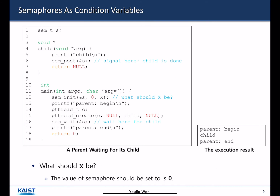We can also use the semaphore as a condition variable. There is a child thread that prints the string 'child', and the parent thread's main creates a thread. We would like to guarantee the print sequence: parent prints 'parent begin' first, then the child thread prints 'child', then the parent thread prints 'parent end'. We have previously used a condition variable to guarantee the order of execution, but now we are going to use a semaphore to ensure the order of execution as well.